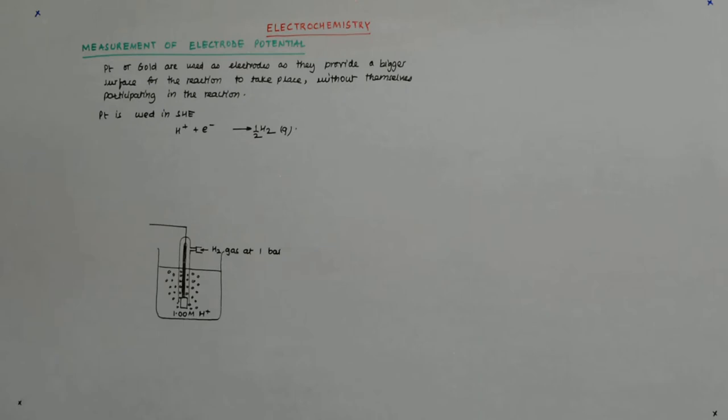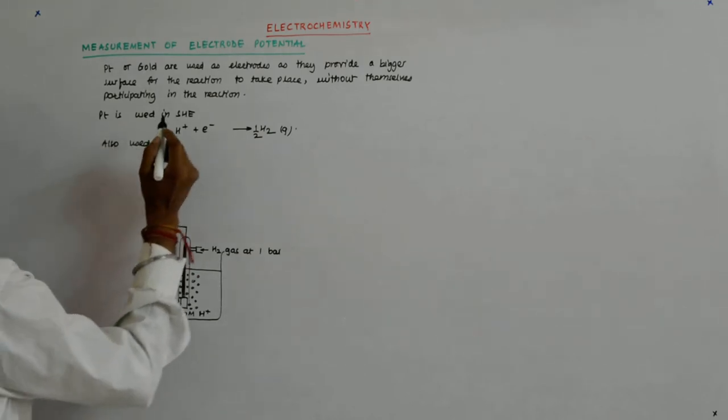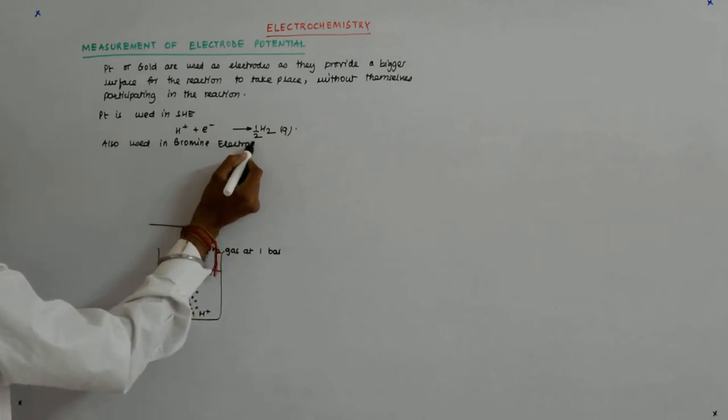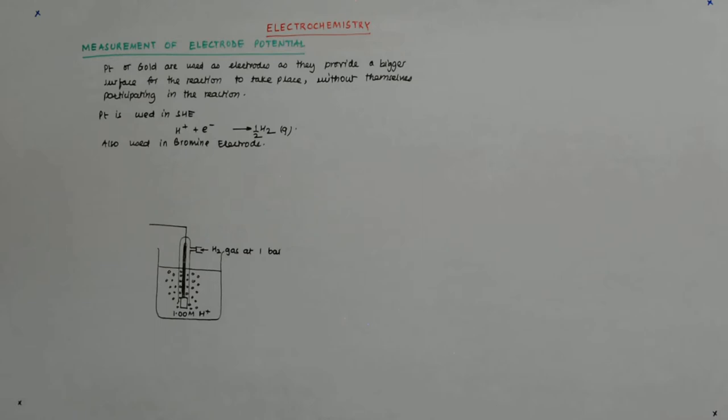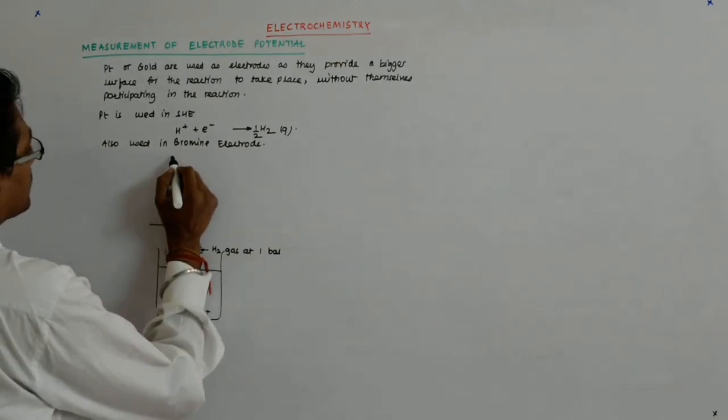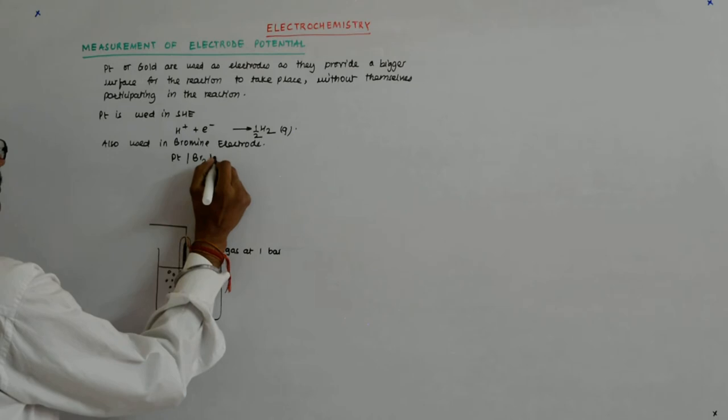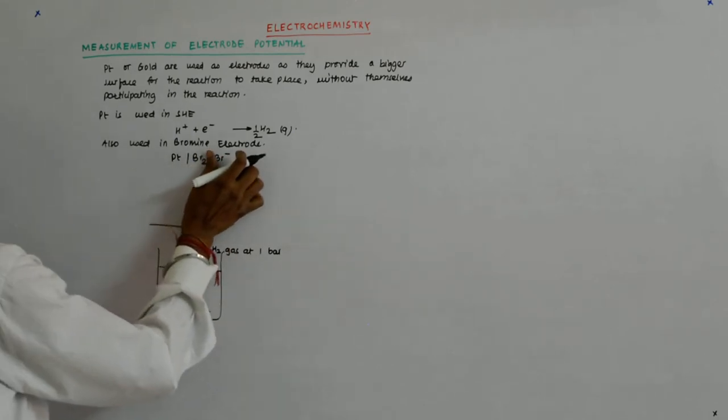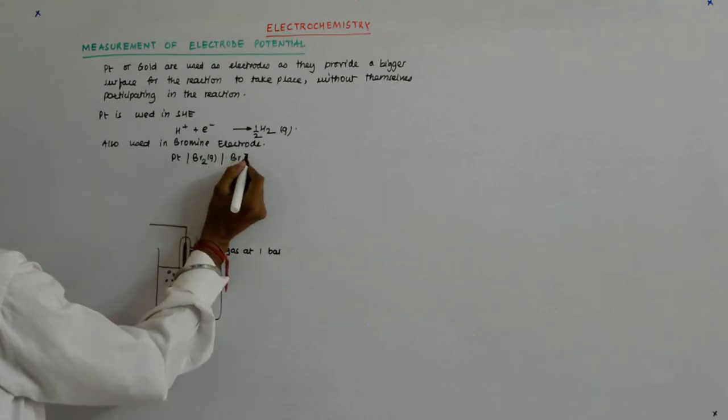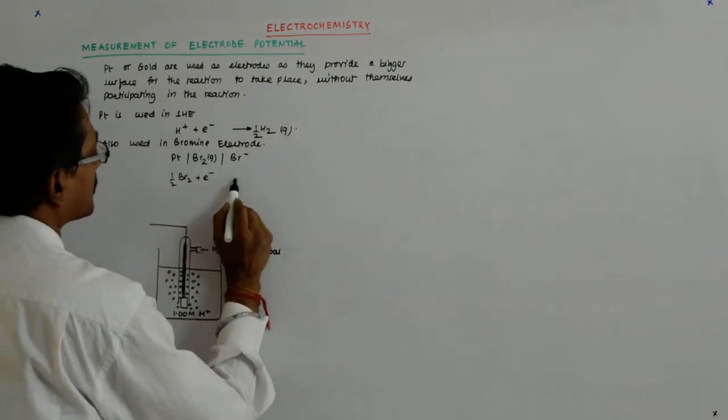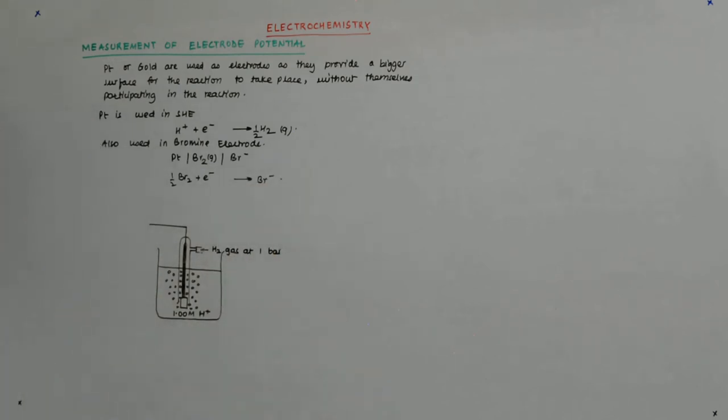It is also used in bromine electrode. PT, Br2 Br-. Br2 gas Br-. And it is Br2 plus one electron giving me Br-. The reduction reactions are these.